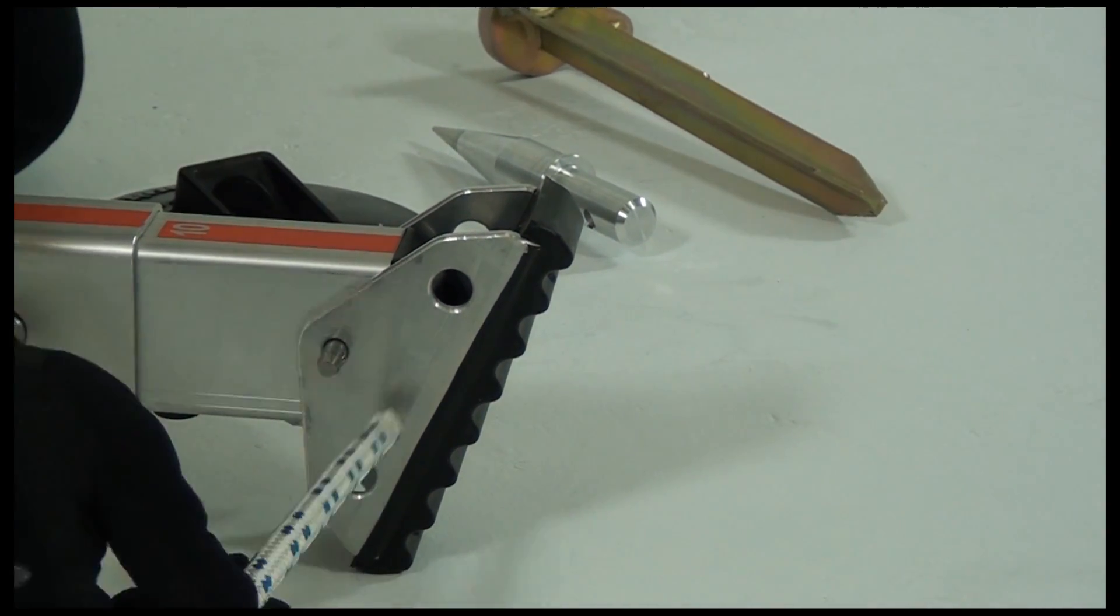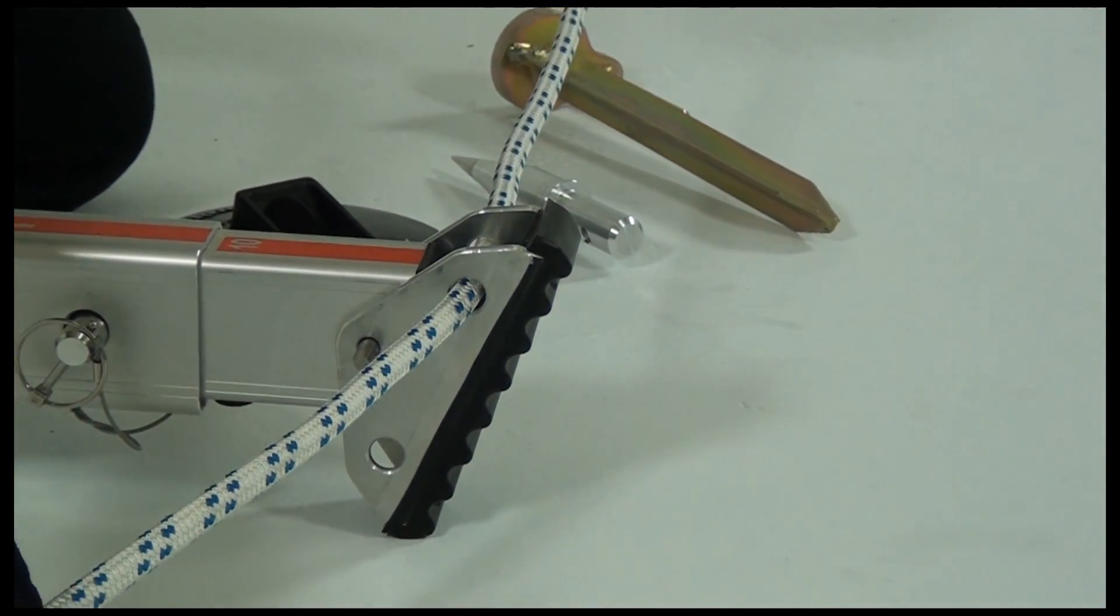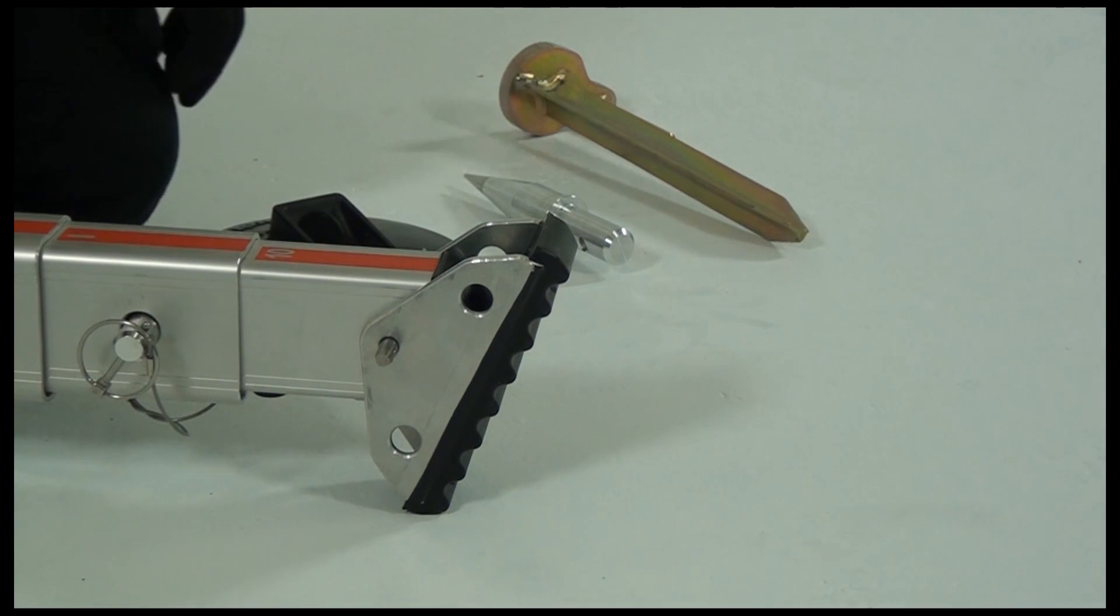Lashing holes are located at the back and front of each standard foot to take leg restraint rope or other lashing techniques.